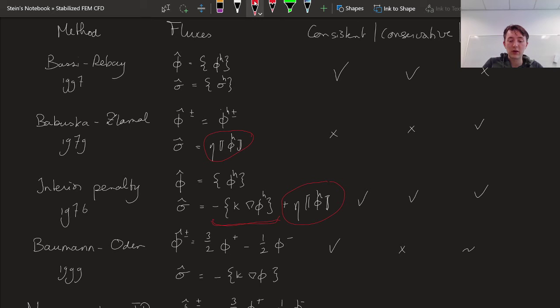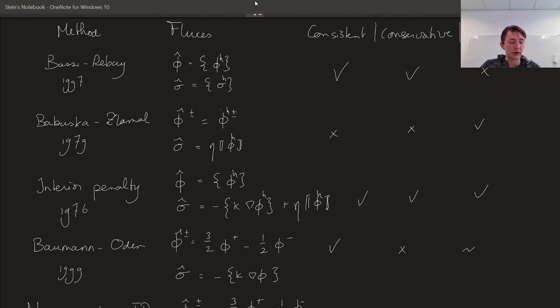And the true solution also has that the jump of phi is equal to zero. So if we substitute the true solution into these definitions, then we obtain the correct fluxes, then our numerical flux becomes the true flux. And that's why this is now a consistent method. And these methods actually also don't have any jumps in the numerical fluxes, so this is also a conservative method. And with a particular choice of penalty parameter eta, we also get a stable method.